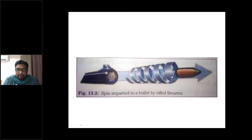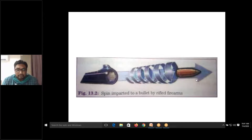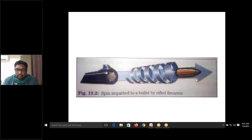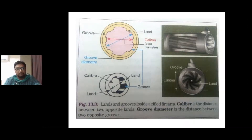Rifling causes rotation of the bullet at about 3000 revolutions per second. These revolutions increase the penetrating power, stability, and velocity of the bullet, allowing it to travel farther, remain stable, and cause more damage to the target. Lands and grooves normally number about 2 to 20. In a smooth bore firearm the internal diameter is called bore, whereas in a rifled firearm it is called caliber.